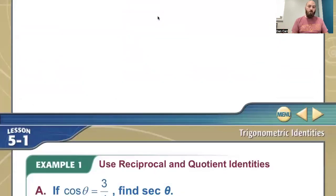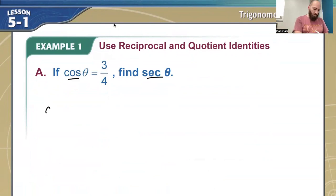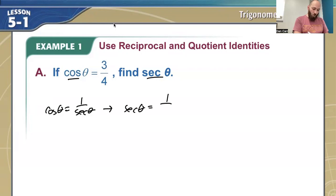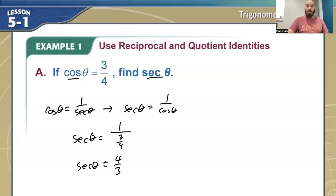So how can we use those? This one should be really straightforward. If cosine of theta is equal to 3 over 4, find the secant of theta. You've probably already done this before. Cosine and secant are the ones that are reciprocals of each other. Since the secant of theta is equal to 1 over the cosine of theta, I'm going to find the secant of theta by taking 1 over 3/4, which is the same as multiplying by 4 over 3. So that is my reciprocal there.